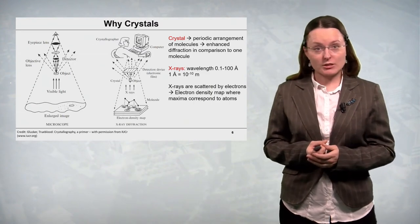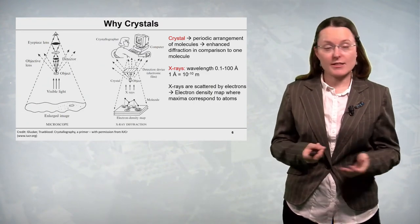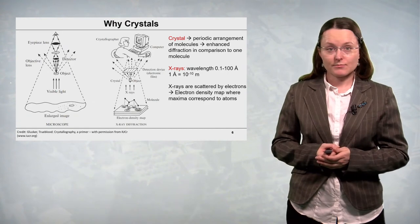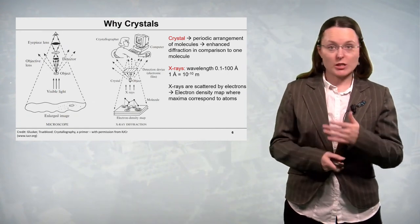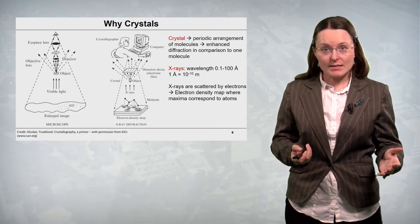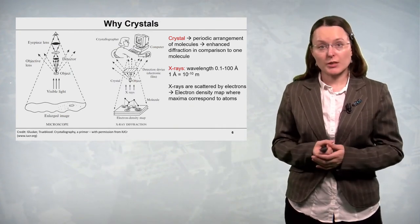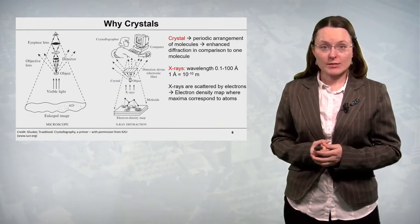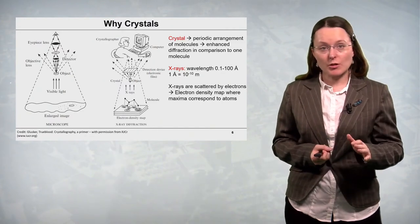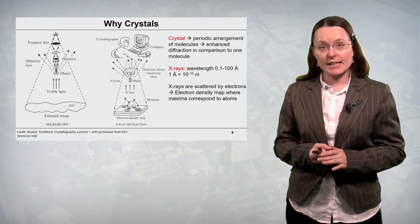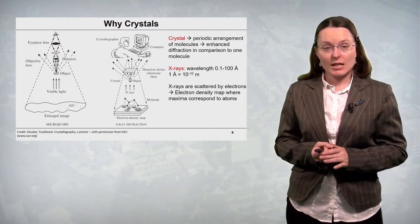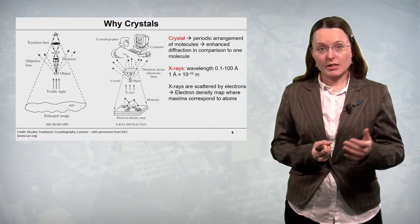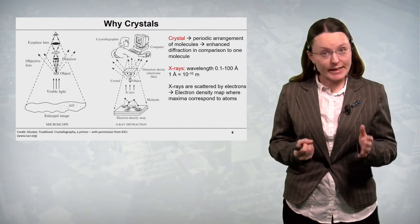But we learned in the part on geometrical crystallography that in crystals molecules are arranged in a periodic way. So we could take a crystal with such periodic arrangement of molecules and the diffraction on this object would be enhanced in comparison to one molecule. On the other hand, we would be able to obtain some image of the molecule but averaged over whole unit cells of the crystal.